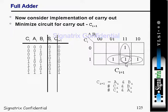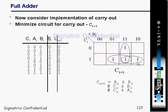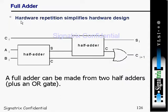You map the values and make pairs of two ones, four ones, or eight ones. From this, you get three terms: Ci·Bi, Ai·Bi, and Ci·Ai. These three combinations give the carry-out expression.